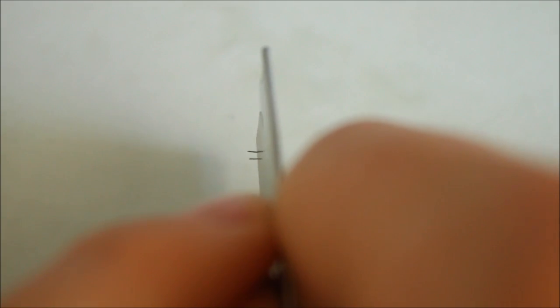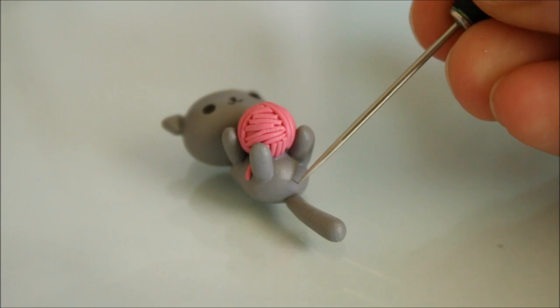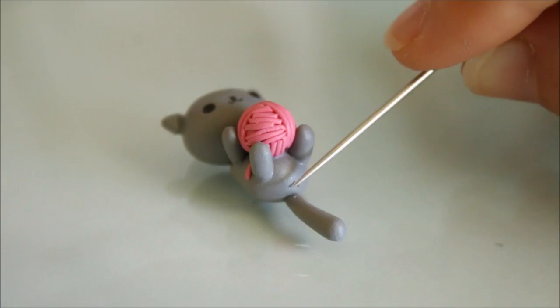And then lastly for the little butt roll out a very thin snake of black clay, cut off two pieces and then make a cross just above the tail.